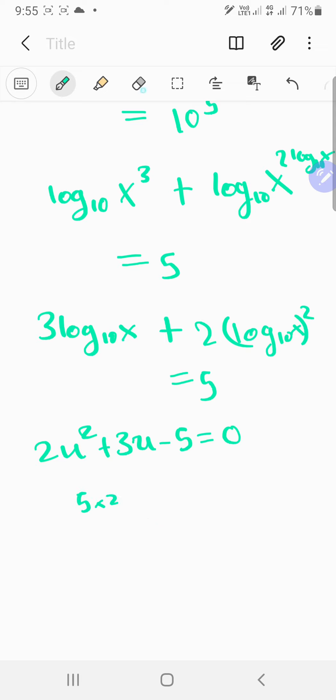So 2u^2 + 5u - 2u - 5 = 0. You just get (2u + 5)(u - 1) = 0. So u equals -5/2 or u equals 1.